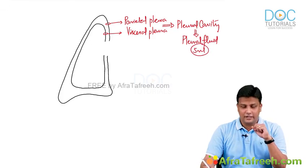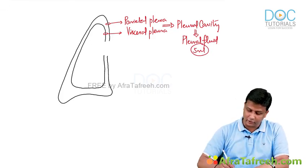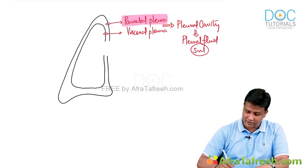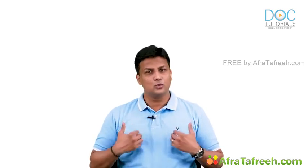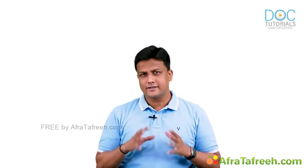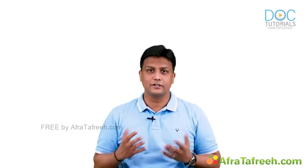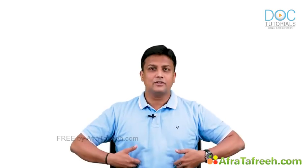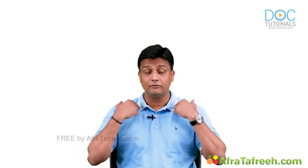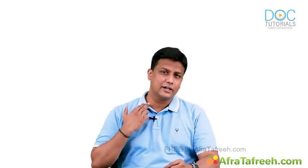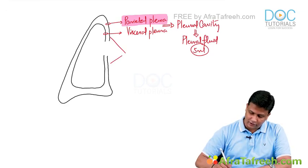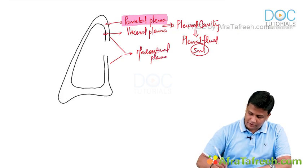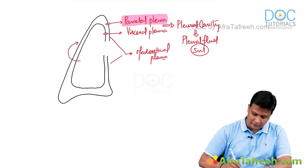Now let's go into more depth about the parietal pleura. It is given different names based on the region. Between the right and left lungs is the mediastinum, and the parietal pleura towards the mediastinum is the mediastinal pleura. The parietal pleura towards the ribs is the costal pleura, and below is the diaphragmatic pleura.